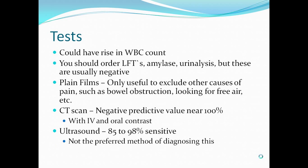You should always order liver function tests, amylase, and urinalysis, but these are usually negative. Your urinalysis can sometimes show a sterile pyuria, but this is usually caused by inflammation adjacent to the ureter. Plain films are useful only to exclude other causes of pain, such as bowel obstruction or perforation with free air. A CT scan is the imaging modality of choice, with a negative predictive value nearing 100% with IV or oral contrast. Some radiologists can read a CT scan without IV contrast, just with oral contrast. Ultrasound is 85% to 98% sensitive and is not the preferred method for diagnosing this.